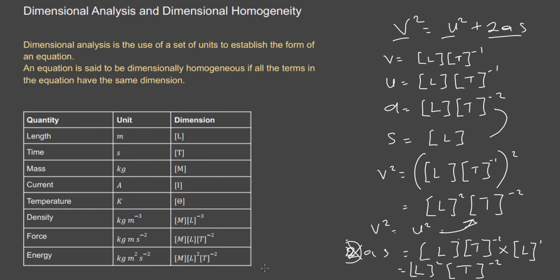To summarize: we've talked about physics and measurements, and introduced the two categories of physical quantities — base quantities and derived quantities. Base quantities are the foundation, and derived quantities are based on them. We've also covered prefixes in SI units, and dimensional analysis and dimensional consistency.